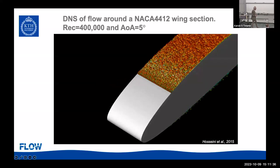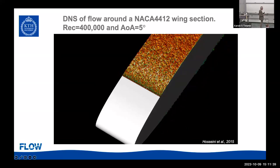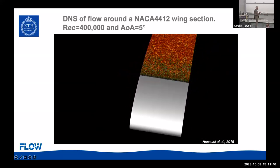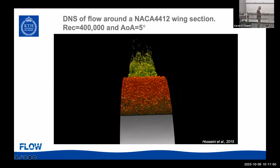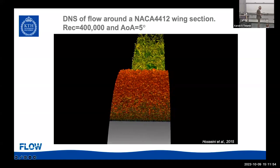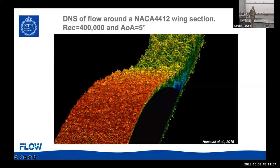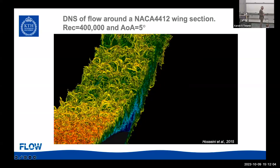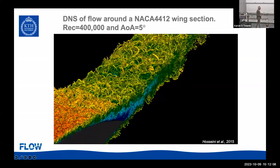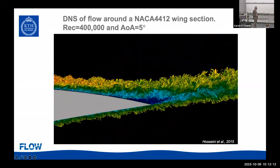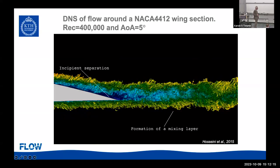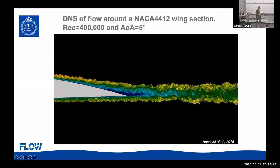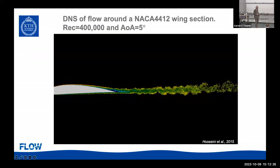This is the lambda-2 criterion showing all the turbulent structures. They start exactly at the trip line because we have tripping of the flow there to turbulence using random forcing. You can see all the turbulent structures coming off — red signifies fast velocities, green and yellow a little bit slower, and blue areas where streamwise velocity is more or less zero, indicating more or less separated flow. There's some incipient separation, a formation of a mixing layer, and if we look very far back, we see the formation of a Carmen-like vortex street.